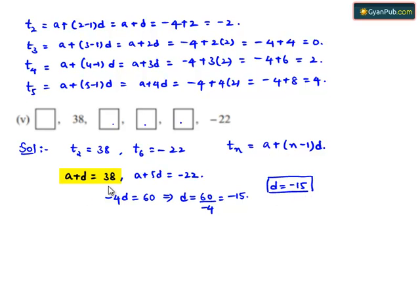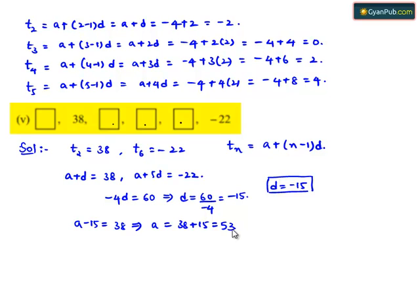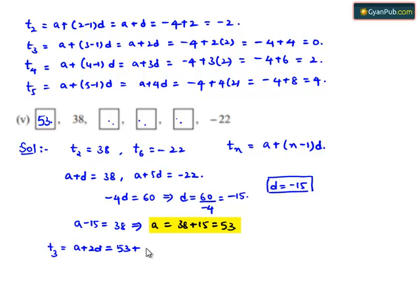Substituting d = -15 into a + d = 38: a - 15 = 38, which implies a = 38 + 15 = 53. So the first blank is filled with 53. For T3 = a + 2d = 53 + 2×(-15) = 53 - 30 = 23. The second blank is filled with 23.